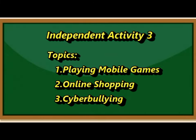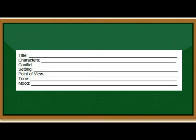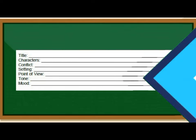Independent Activity 3 — choose one topic: Number one, playing mobile games; Number two, online shopping; Number three, cyberbullying. This will be the topic of your prose. In planning to write a prose, it may be helpful to identify the features of the prose. Fill in the necessary information to complete the features of a fictional prose on your answer sheet.